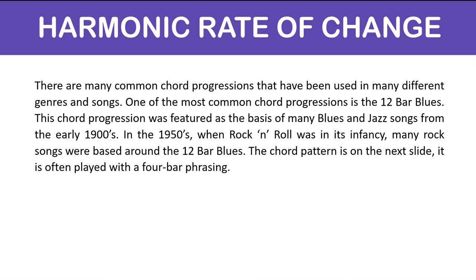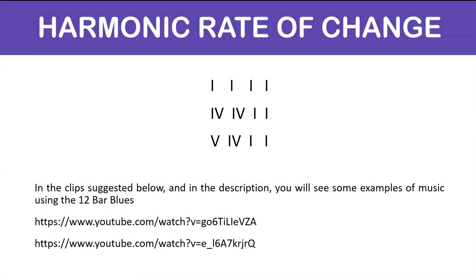The 12-bar blues chord pattern is often played with a four-bar phrasing. The pattern is: I, I, I, I, IV, IV, I, I, V, IV, I, I. If the 12-bar blues is repeated, the last chord is often a V7. In the key of C major, this would be: C, C, C, C, F, F, C, C, G, F, C, C — and each of those chords is usually played for four beats. In the clips suggested in the description, you'll see some examples of music using the 12-bar blues.